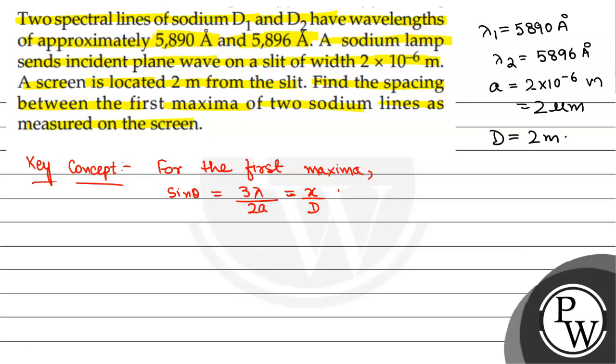Now we'll calculate: x₁ = 3λ₁D/(2a) and x₂ = 3λ₂D/(2a). Here, a is the same for both. A₁ and A₂ are the same; only λ₁ and λ₂ change. Therefore,